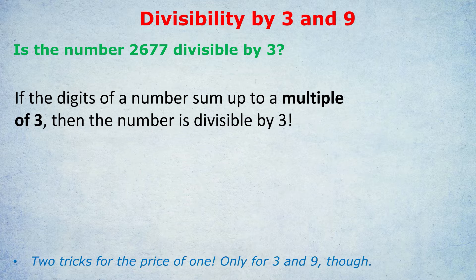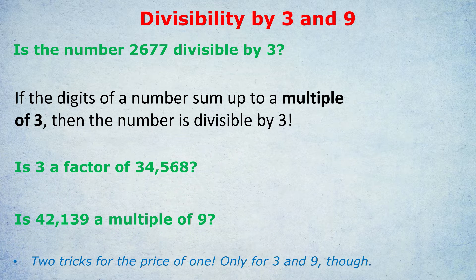Let's do a couple of examples then. Is 3 a factor of 34,568? Notice I phrased it differently. It's not, is the number a multiple of 3? It's just a different phrasing. It means the same thing.